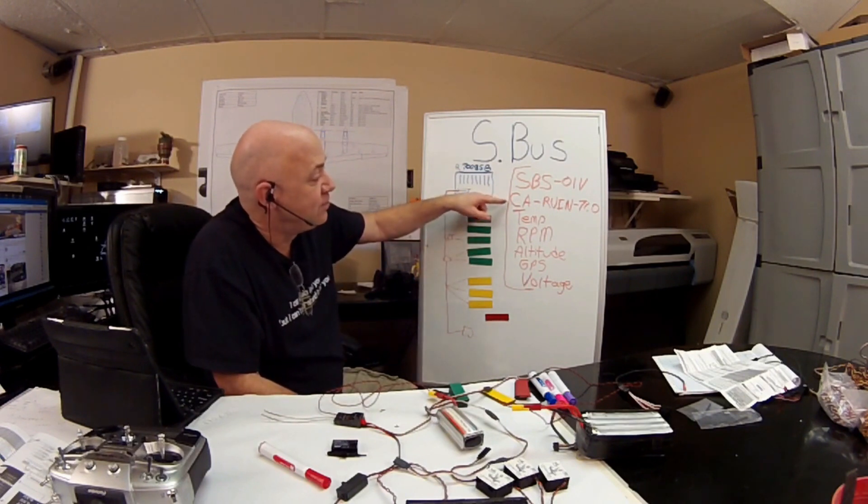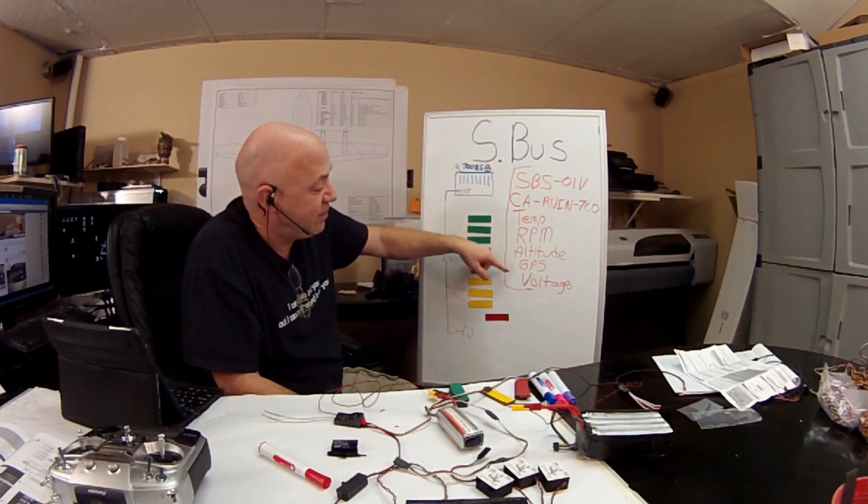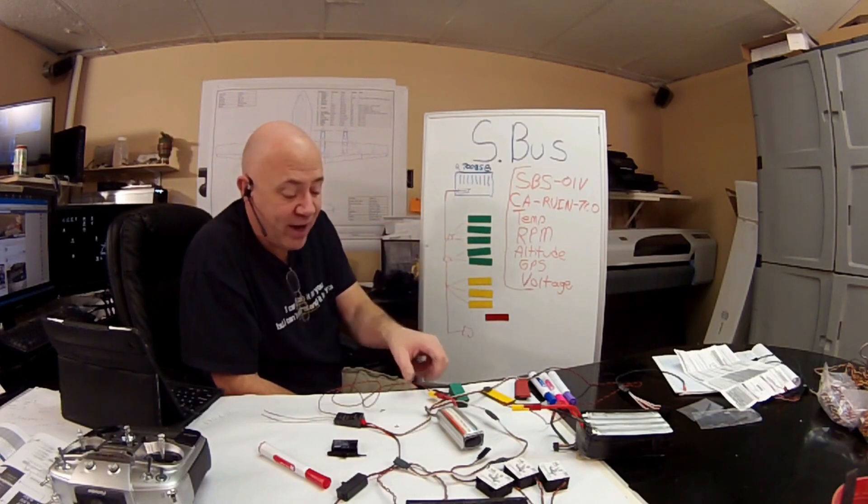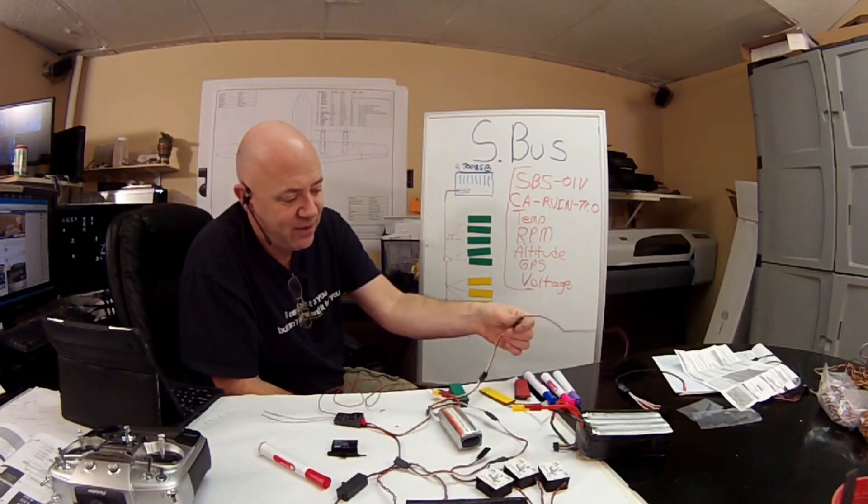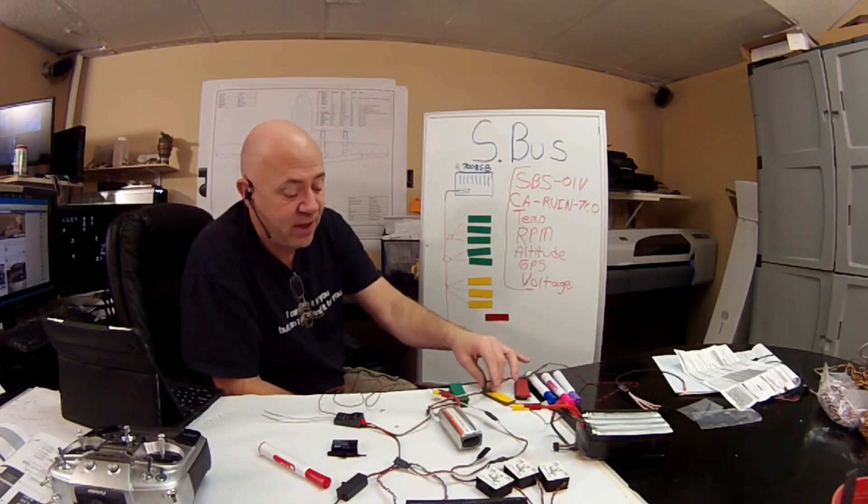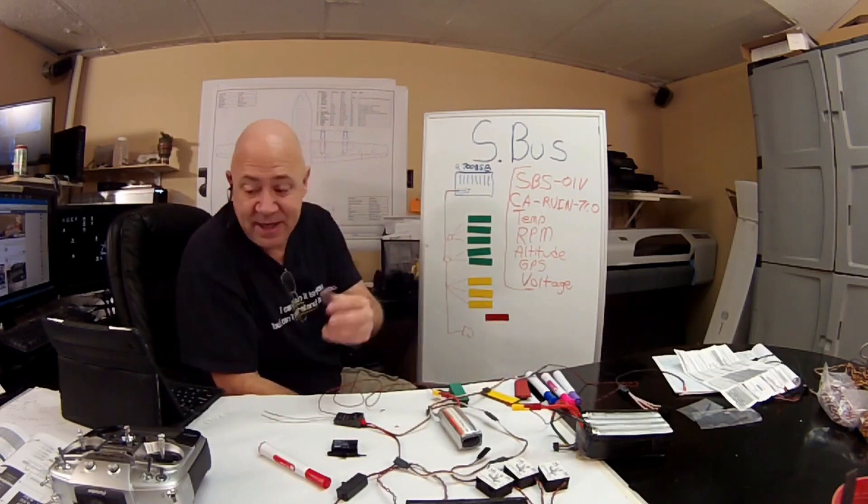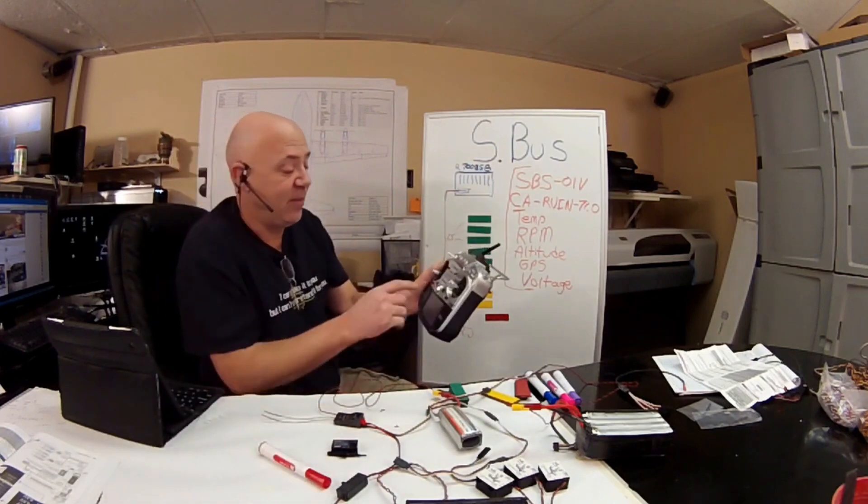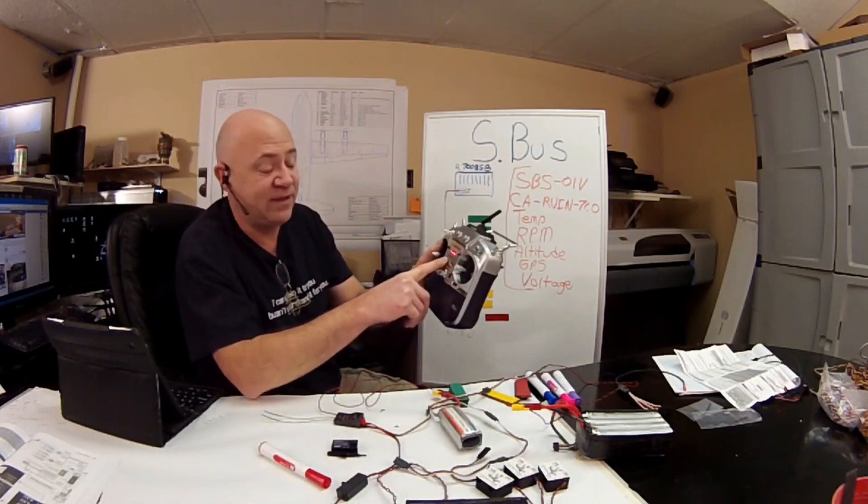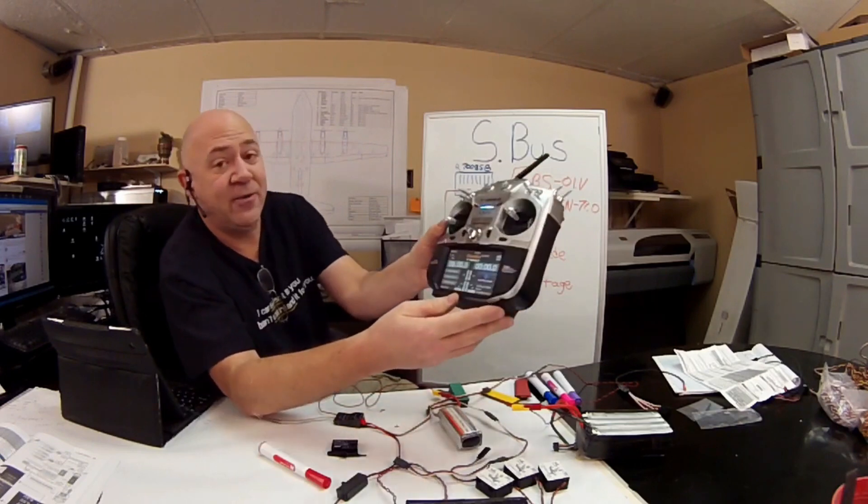So if you want to do the temp, the RPM, the altitude, GPS, and voltage, all you have to do is buy the little module or little device, plug it into anywhere on the SBUS and it will automatically come up on here. So what I'm going to do here and hopefully you can see this, but when I just turn on my radio.